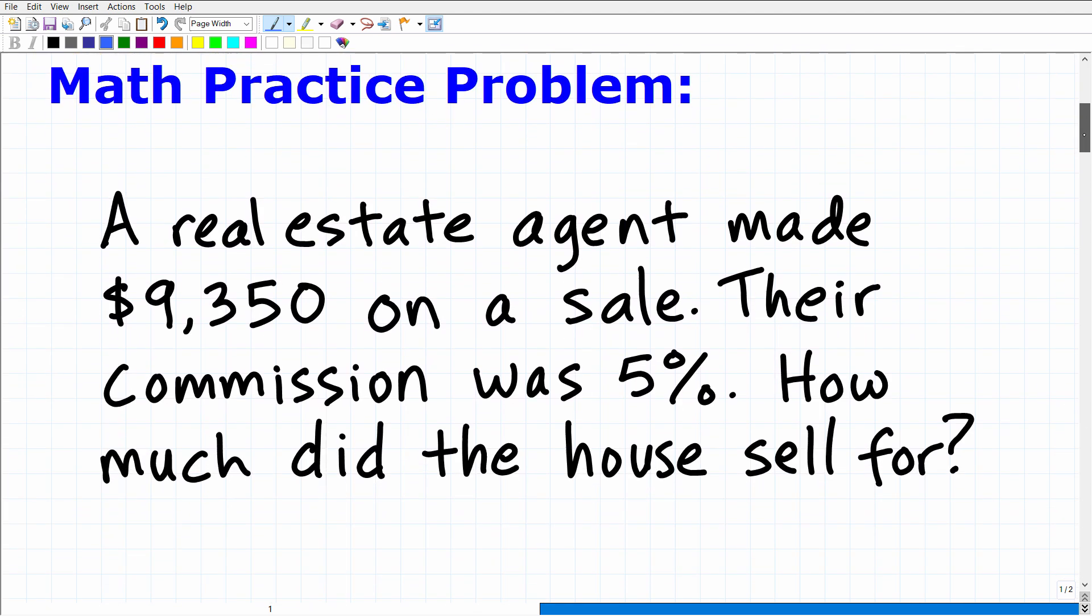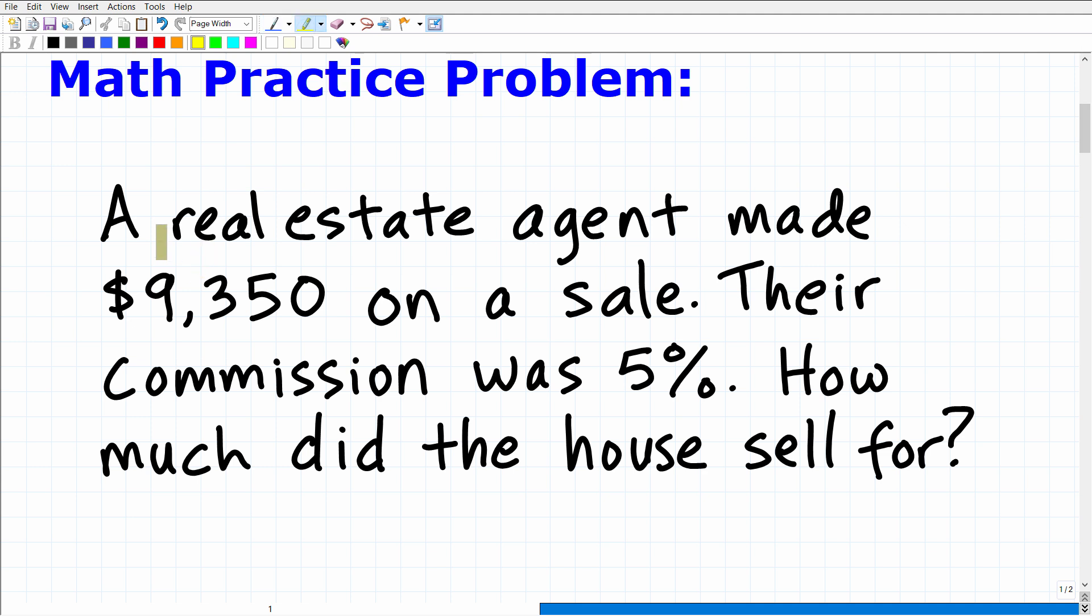So, let me go ahead and read it to you. Hopefully, it's pretty straightforward. It says, a real estate agent made $9,350 on a sale of a home. Their commission was 5%.